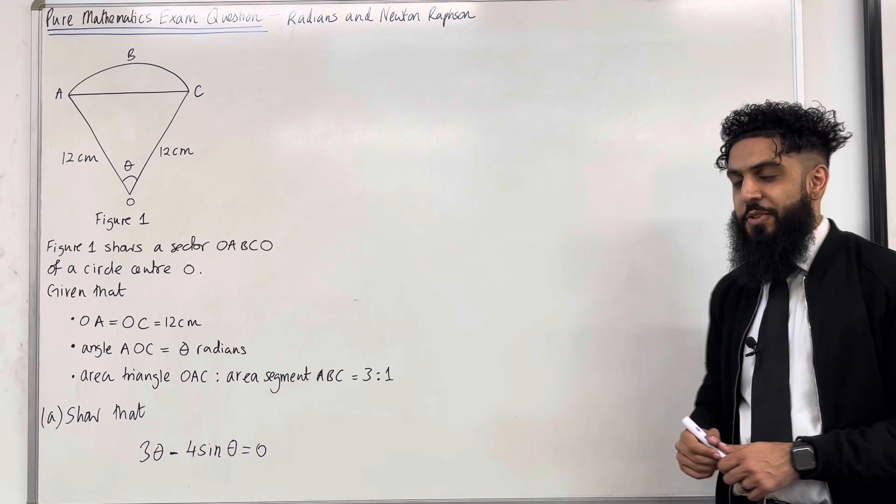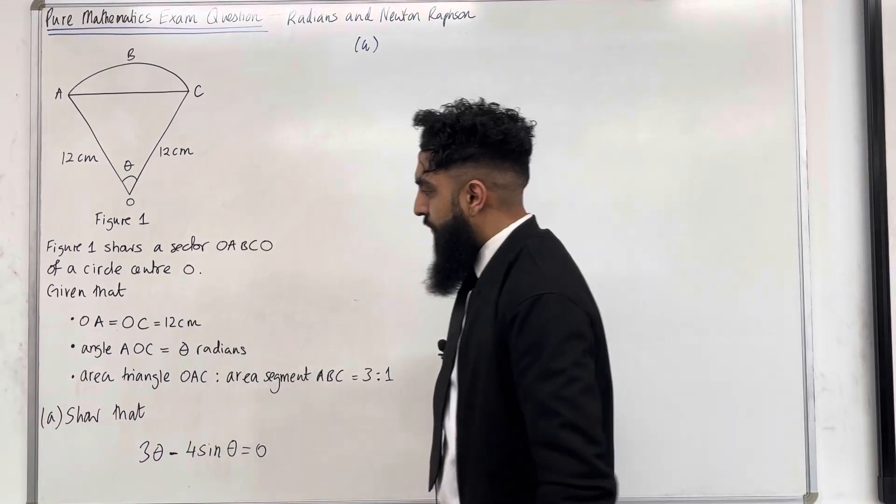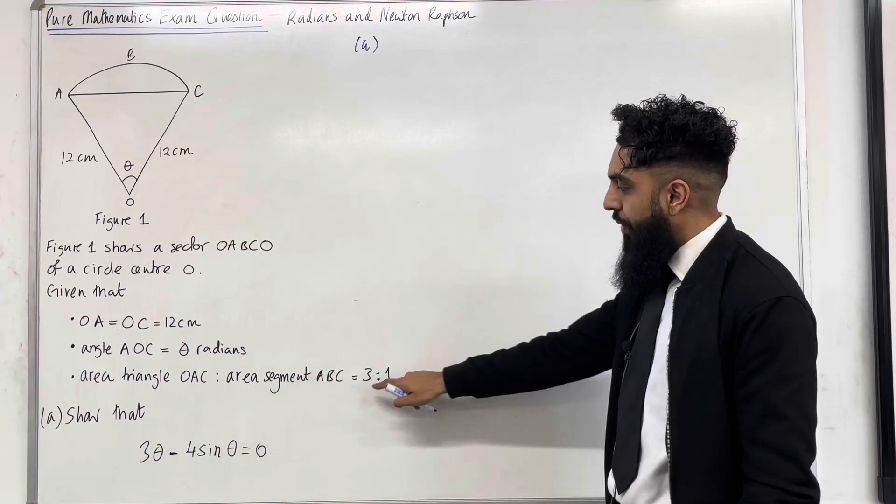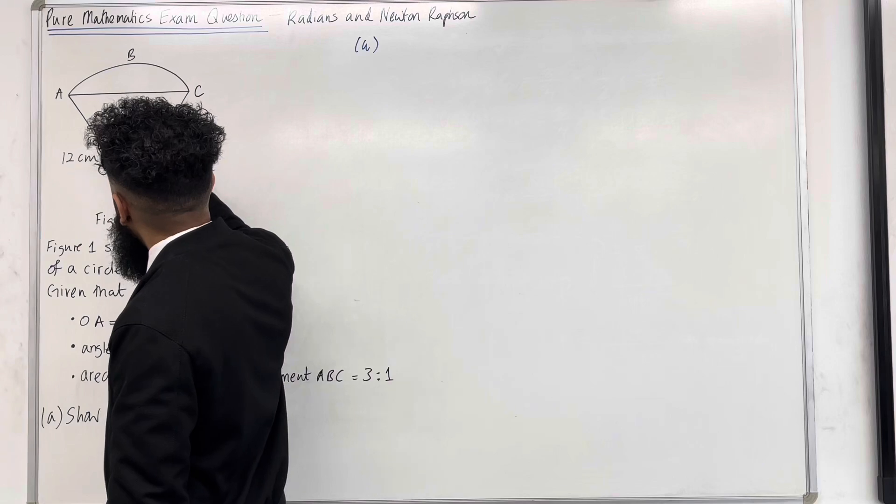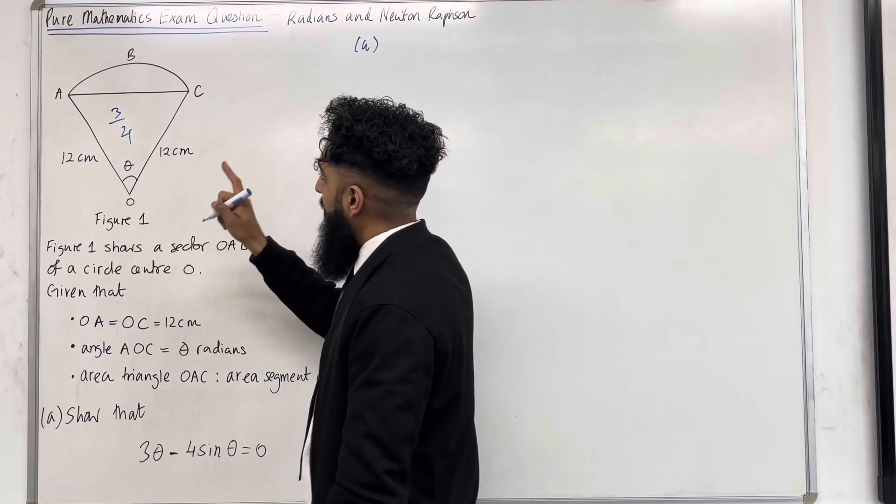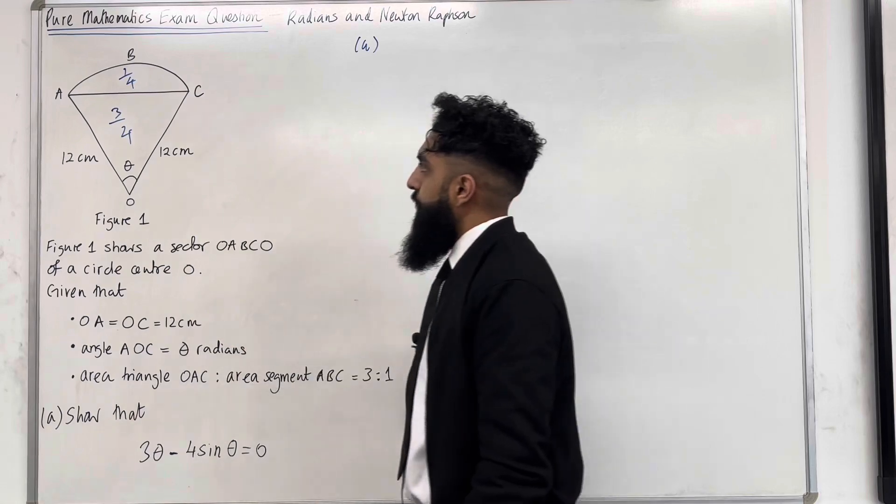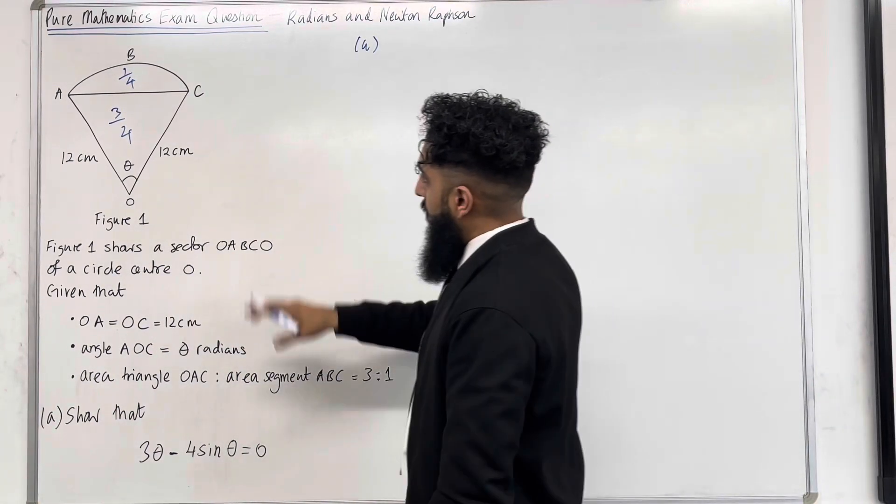Let's have a look at the solution to part A. We've got area triangle OAC to area segment ABC equals 3 to 1, so the area of the triangle is three quarters of the area of the sector, and the area of the segment is one quarter of the area of the sector. I'm going to use that result to generate an equation.